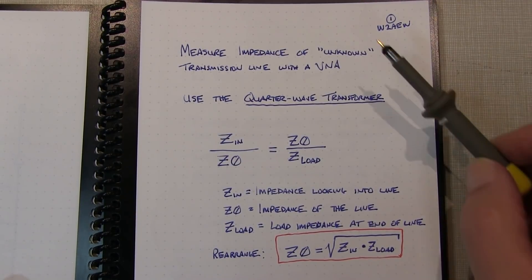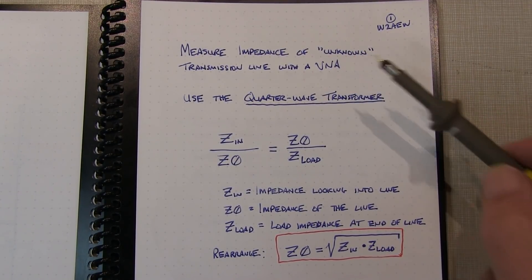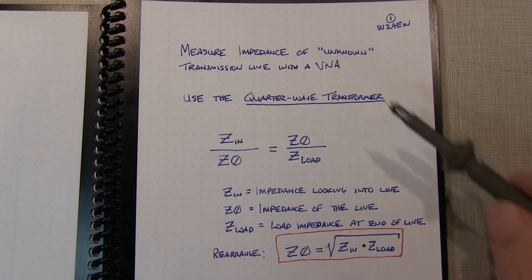In this video, we're going to take a quick look at how to measure the impedance of an unknown transmission line, or piece of coax, with a VNA.